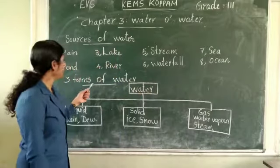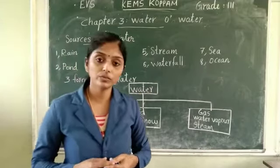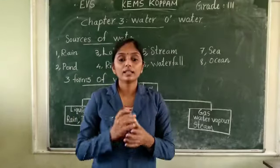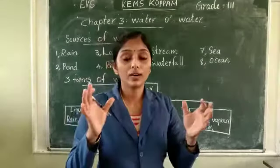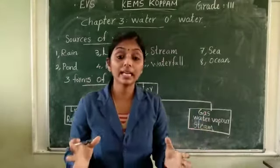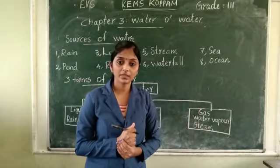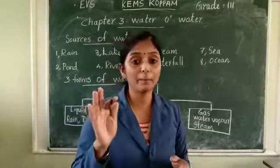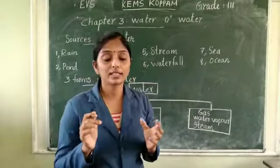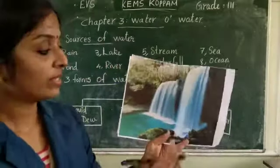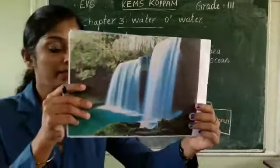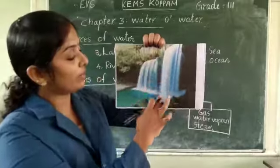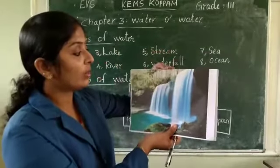Now let us discuss the three forms of water. We can see water in three forms. Before that, I will show you some pictures for you to identify the water bodies. Can you see this? This is a waterfall — water falling from a height.